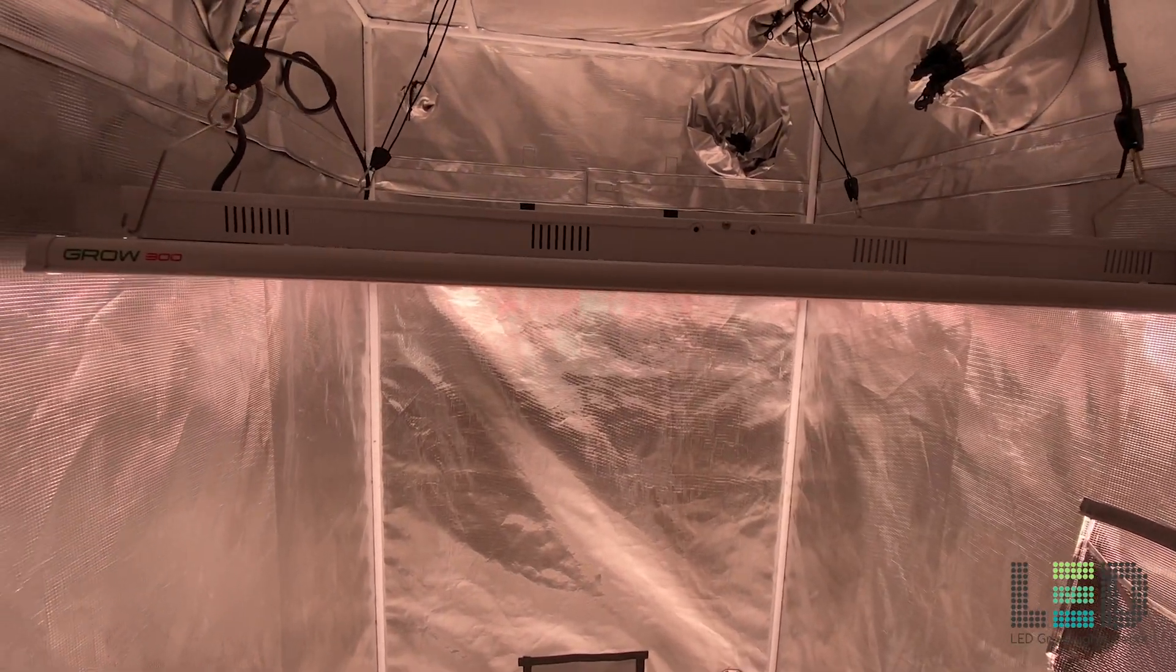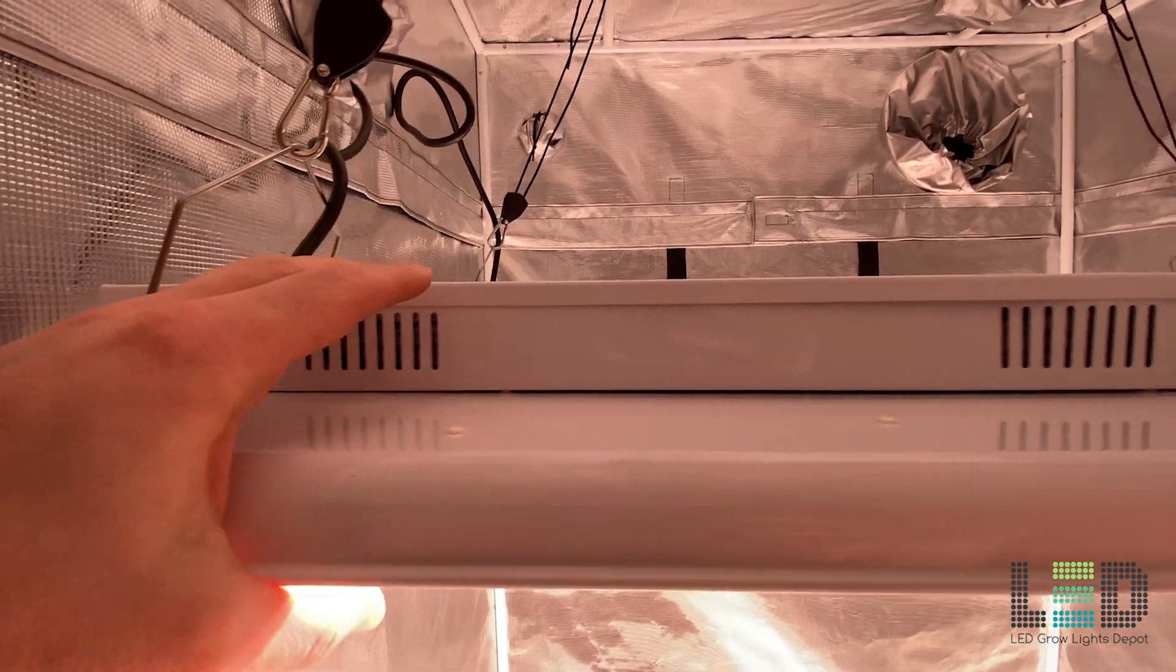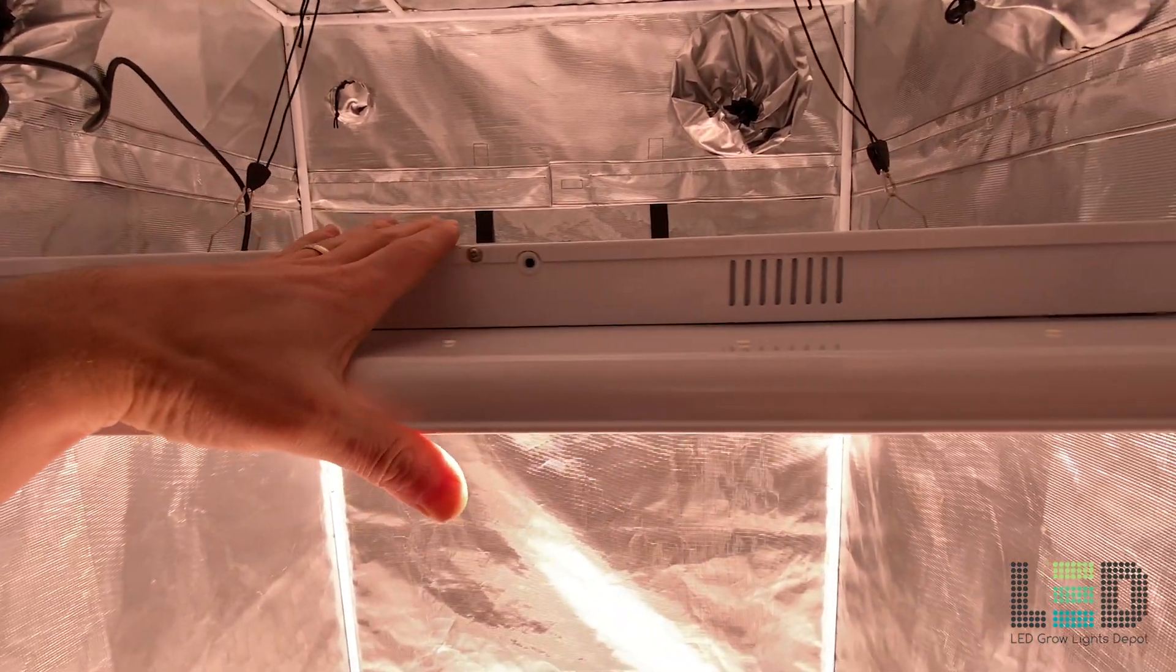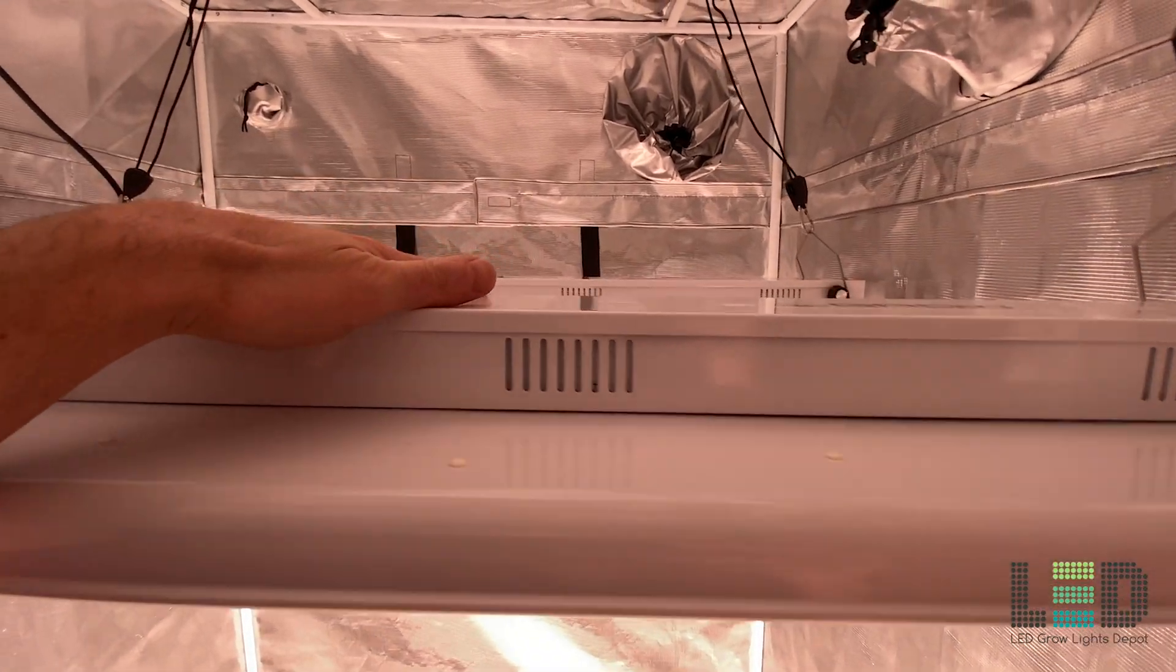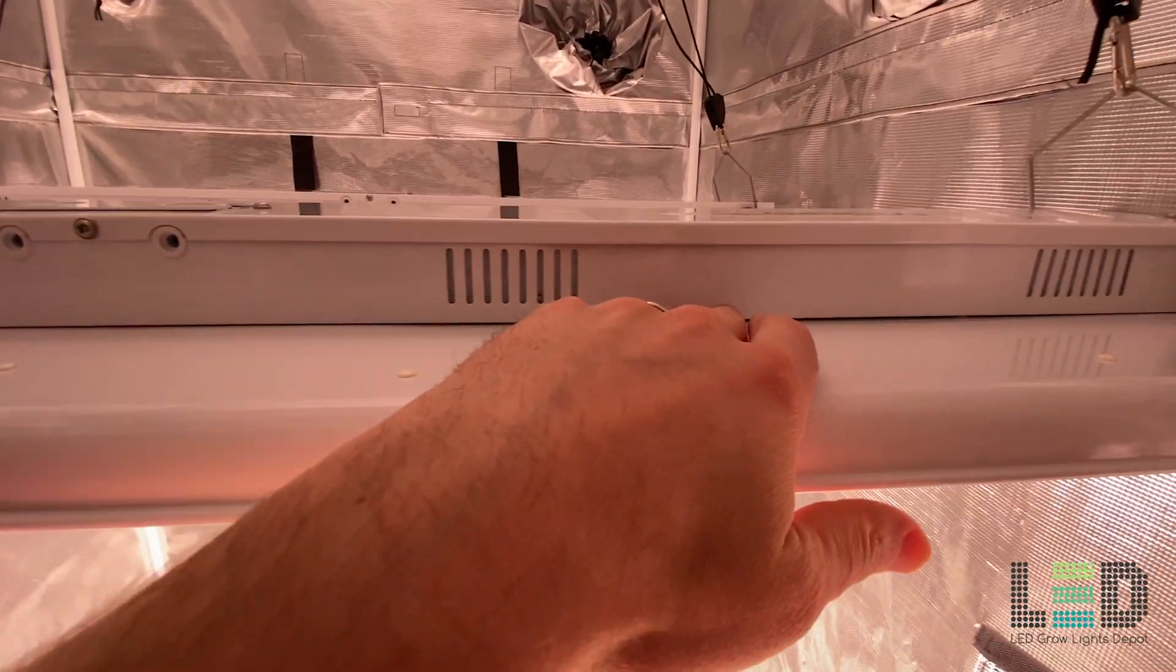If vegging, you can hang these lights 18 to 24 inches above the canopy or keep them at a lower height and dim them down. The Grow 300 draws 321 watts at the wall and 2.68 amps at 120 volts, according to Grow Light Sciences specs.